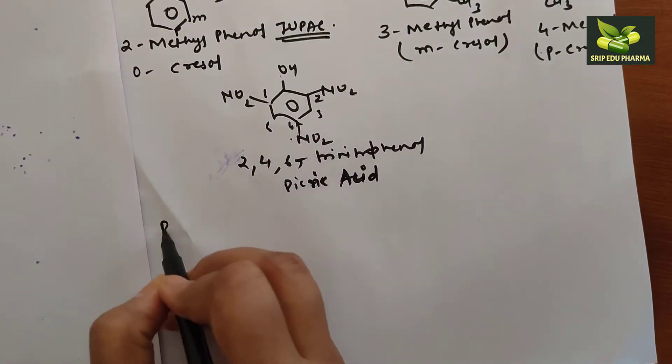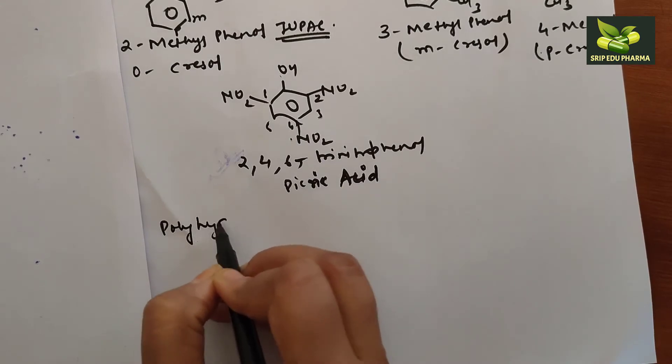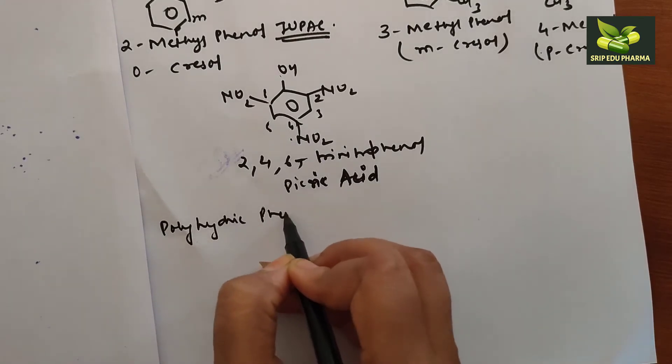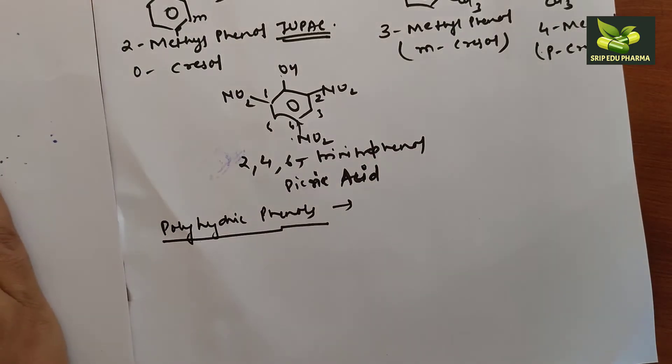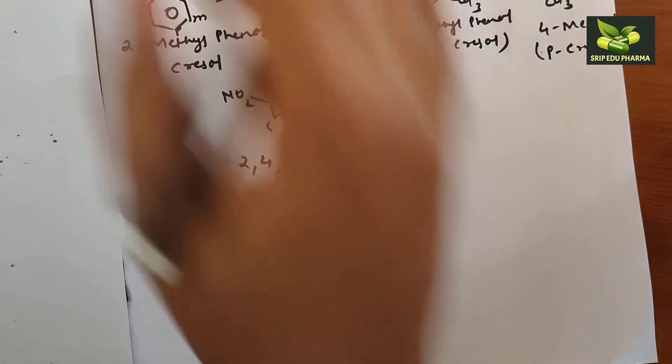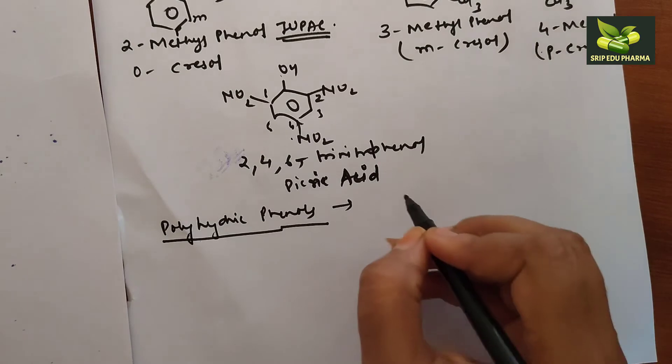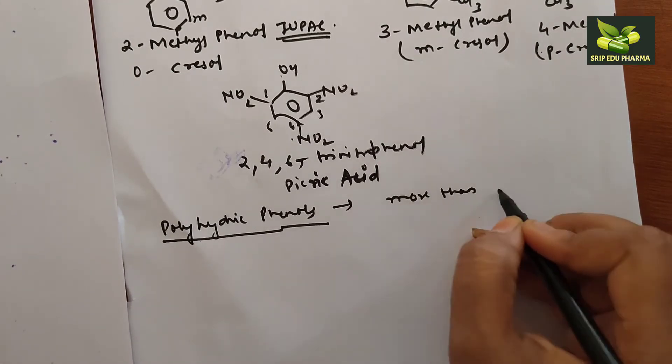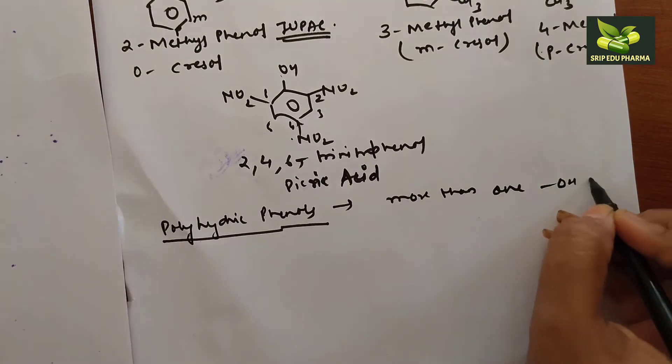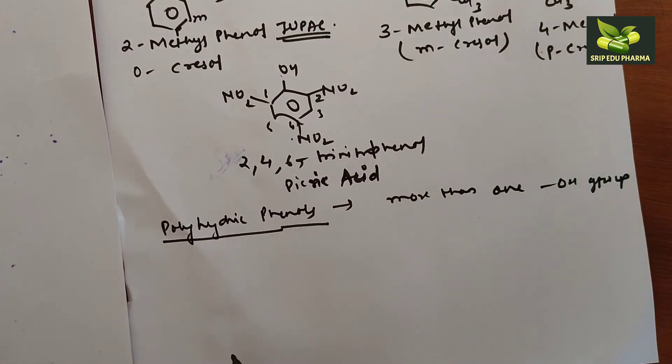Let's see some examples of polyhydric phenols. Today we are doing a general introduction class. Next, we will see its synthesis. What are polyhydric phenols? Those which have more than one hydroxyl group, where more than one OH group is present.